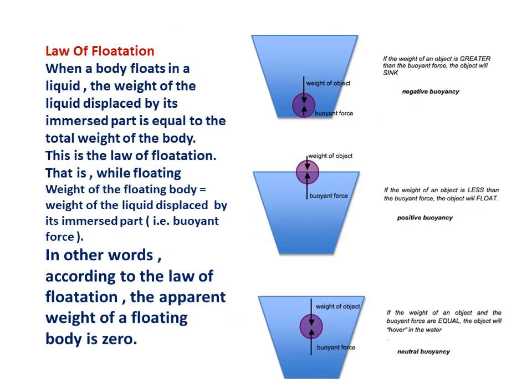Law of floatation: when a body floats in a liquid, the weight of the liquid displaced by its immersed part is equal to the total weight of the body. While floating, the weight of the floating body equals the weight of the liquid displaced by its immersed part, that is, the buoyant force. In other words, according to the law of floatation, the apparent weight of a floating body is zero.